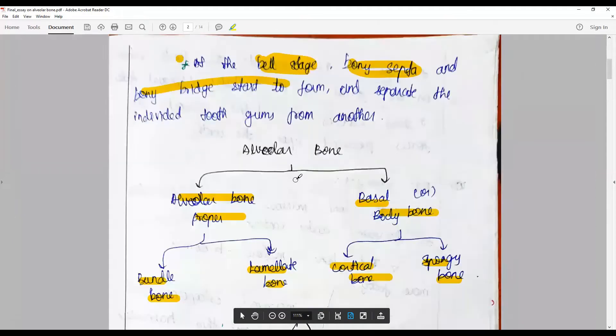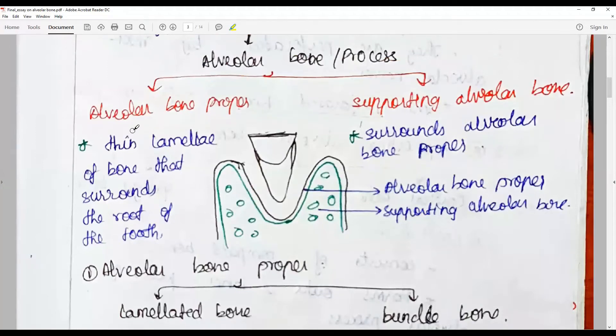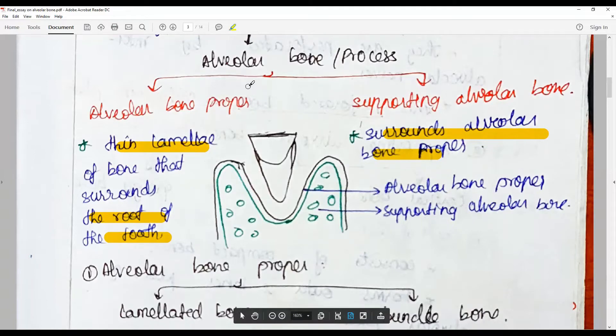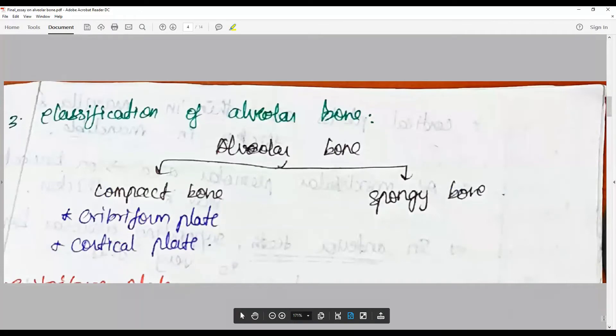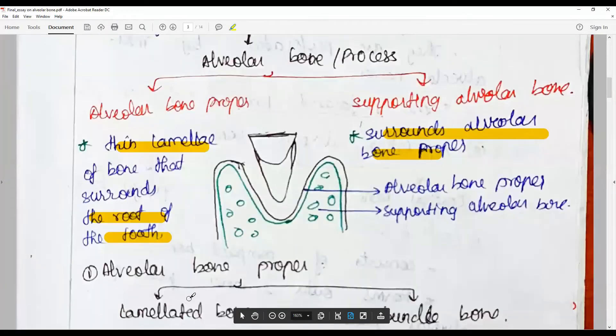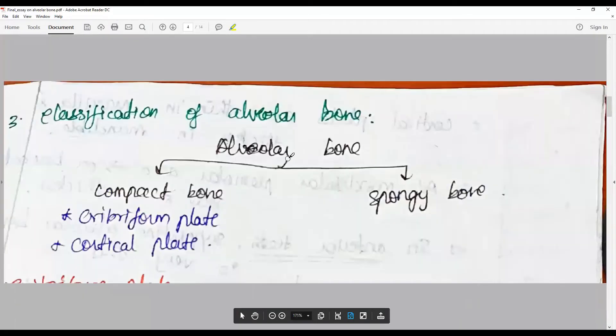The alveolar bone process is divided into alveolar bone proper and supporting alveolar bone. Alveolar bone proper is a thin lamella of bone that surrounds the root of the tooth, whereas supporting alveolar bone surrounds the alveolar bone proper. A diagrammatic representation: alveolar bone proper is further divided into lamellated bone and bundle bone, whereas the other is divided into compact bone and spongy bone.